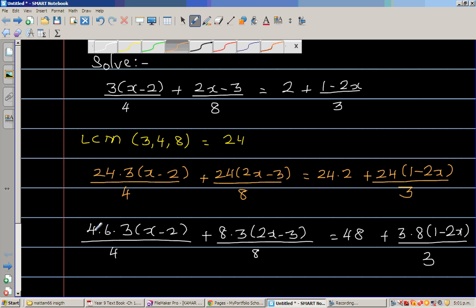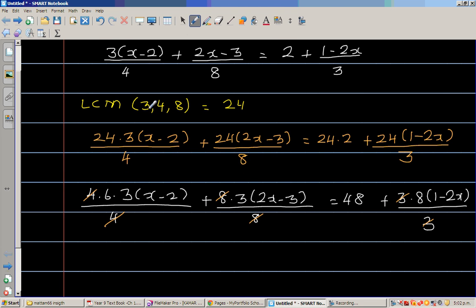So what happens is 4 and 4 gets cancelled. This 8 and 8 gets cancelled. And 3 and 3 gets cancelled. So what remains is you'll not have the denominators.